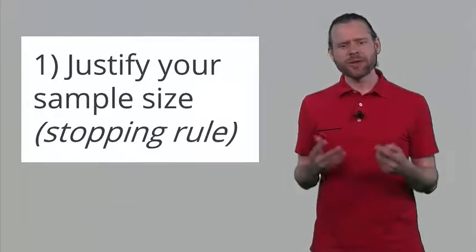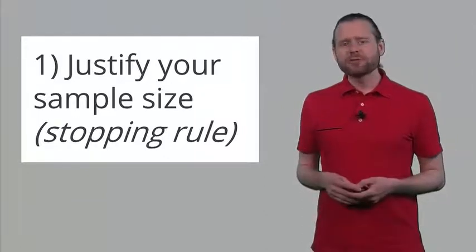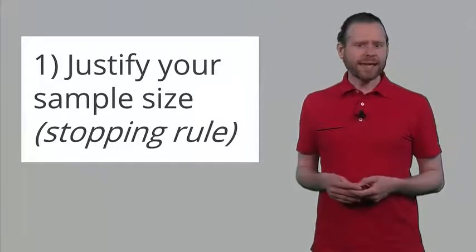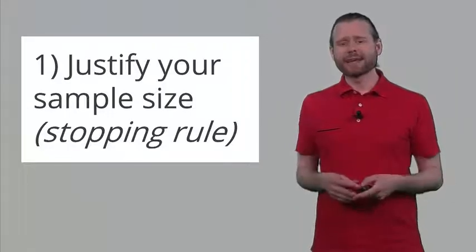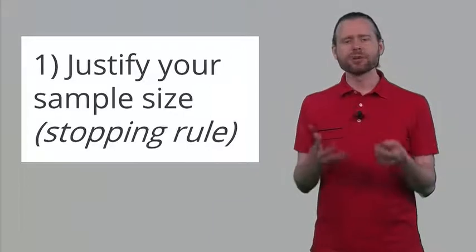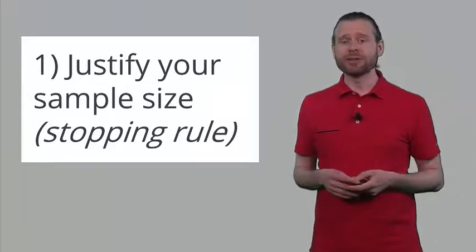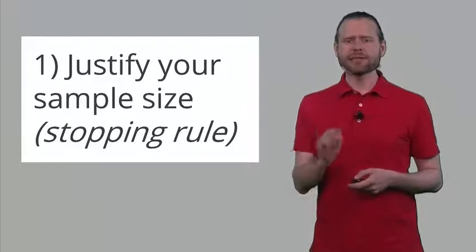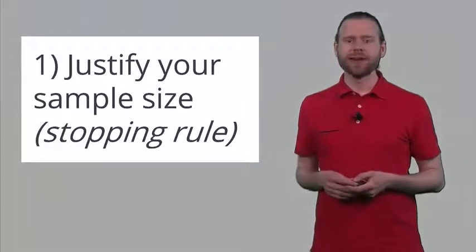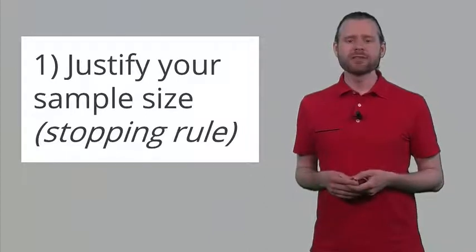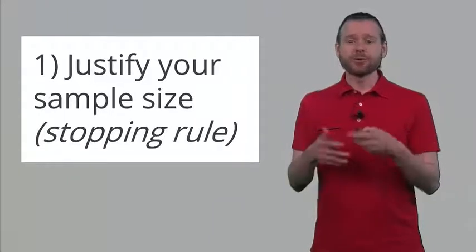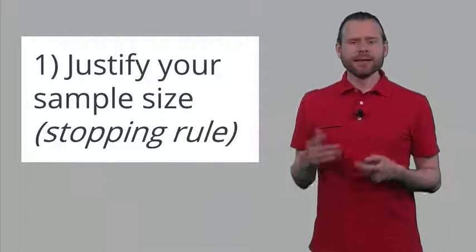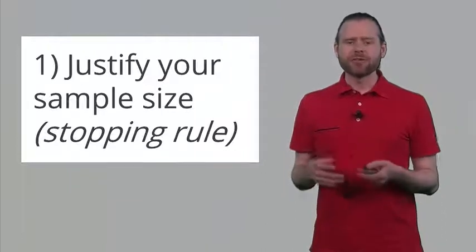So when you pre-register your study, what are things that you need to specify? Well, as we've seen, optional stopping is one way in which you can inflate your type 1 error rate. So one thing that you have to do is justify your sample size. Of course, thinking about your sample size before you collect data is also very useful in controlling your type 2 error rate. Thinking about how many people you need will control both these error rates, but it will fix the type 1 error rate to whatever level you have specified. This is sometimes known as the stopping rule, and it can be anything. You can collect data until it starts to rain outside, or until the week is over, anything that you want. In a later lecture we will talk about justifying your sample sizes.